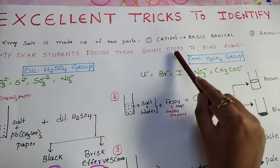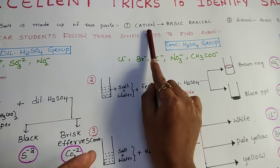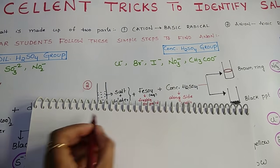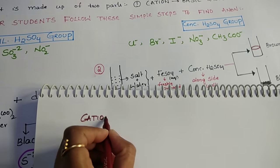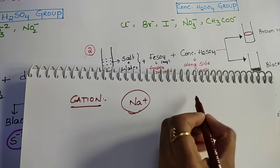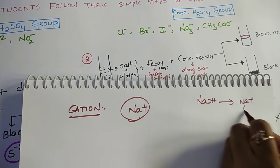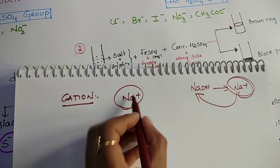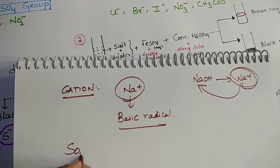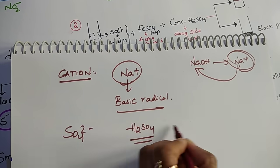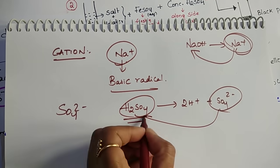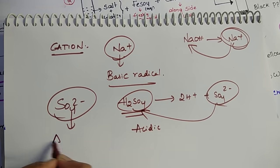Every salt is made up of two parts: one is a cation and another one is an anion. Cation is called a basic radical and anion is called an acidic radical. For example, Na⁺ is formed during the hydrolysis of a base like NaOH, so cations are formed from bases — that's why we call them basic radicals. Similarly, SO₄²⁻ is formed from H₂SO₄, so anions are formed from acids and we call them acidic radicals.